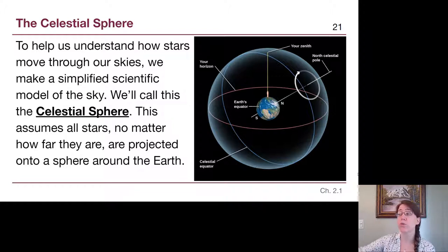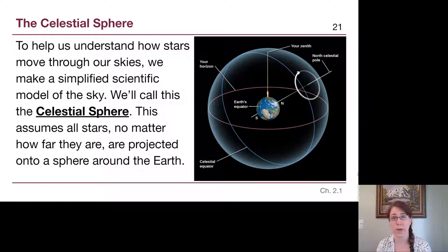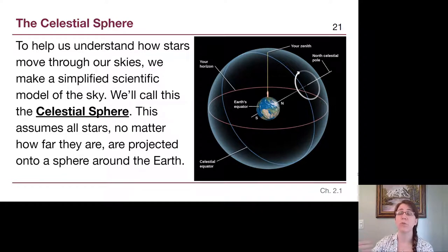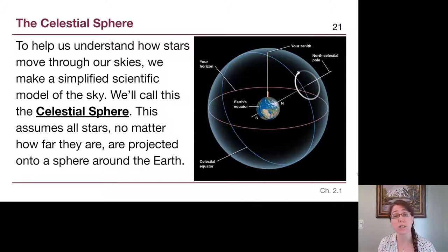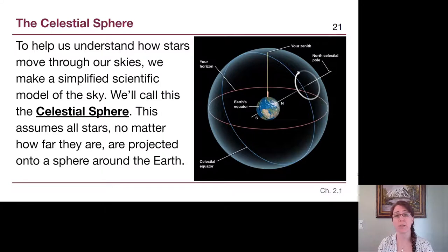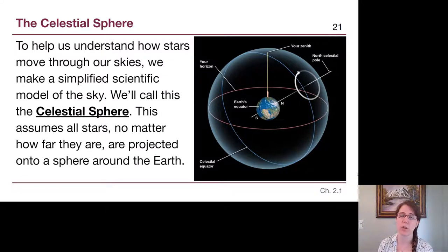In the same way that the sun rises and sets every single day — not because it is physically moving that quickly through our sky, but because it appears to from our perspective — we are going to build what's called the celestial sphere model. This model pretends that we are fully stationary and that all of these different stars rotate around our view.